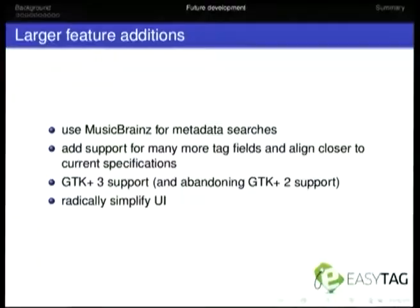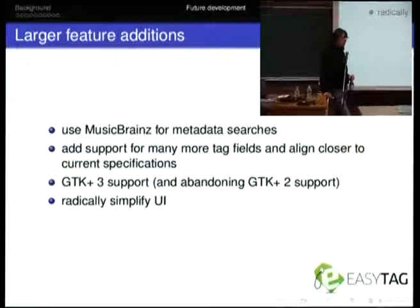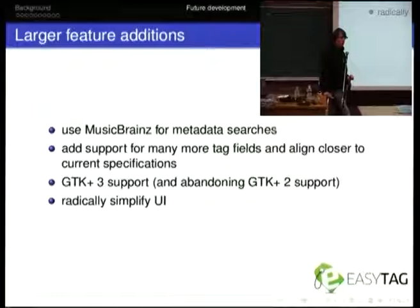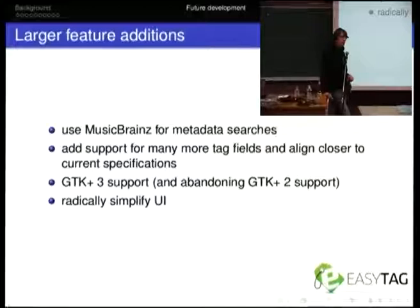One of the things EasyTag doesn't do well is getting metadata from online sources. It currently can fetch from CDDB — like CDDB and GNUDB. But that's really old horrible code that just creates the HTTP headers from concatenating some strings together. Not very nice code, and not really very useful anymore, because a lot of the actual metadata in those databases is not particularly good. But MusicBrainz actually has a pretty good database, and there are a couple of bugs open about adding MusicBrainz support. They have a library for doing this, so that would be a really cool thing to do — if you've ripped a CD you can match that up with a release in MusicBrainz, fetch all the metadata, and put that in the right place, just automating a lot more of this.